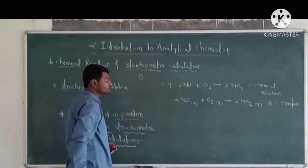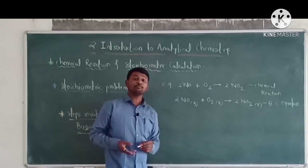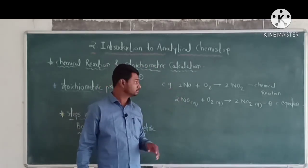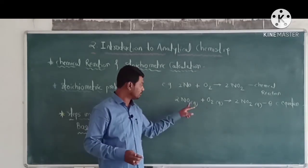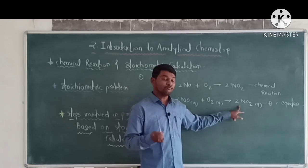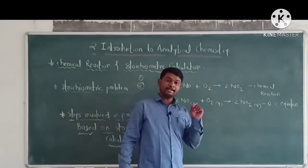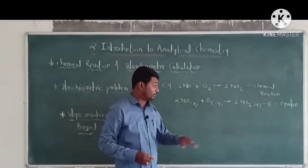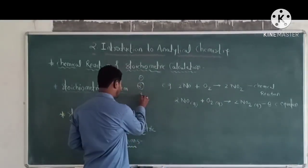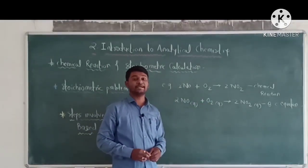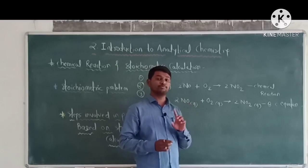First, the balanced chemical equation indicates the number of moles of reactants involved and the number of moles of products formed in a chemical reaction. Second, it indicates the relative masses of reactants and products. Third, it indicates the relationship between the volumes of gaseous reactants and products at standard temperature and pressure.